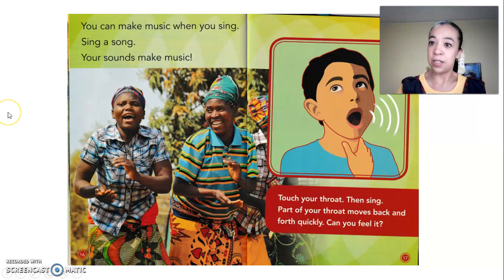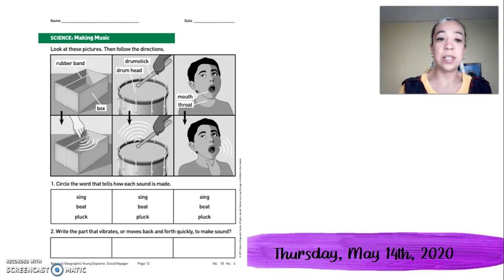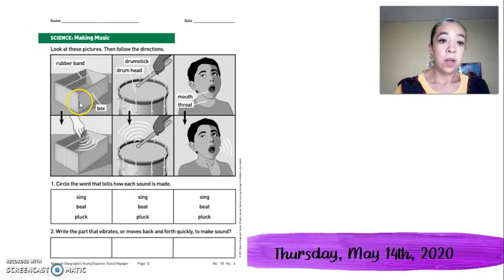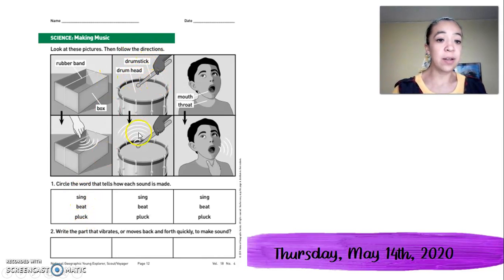Okay, very good. Did you like this article? Yes? Excellent. Now we're going to do this activity. Look at these pictures, then follow the directions. Rubber band and box... drum stick, drum head... mouth.